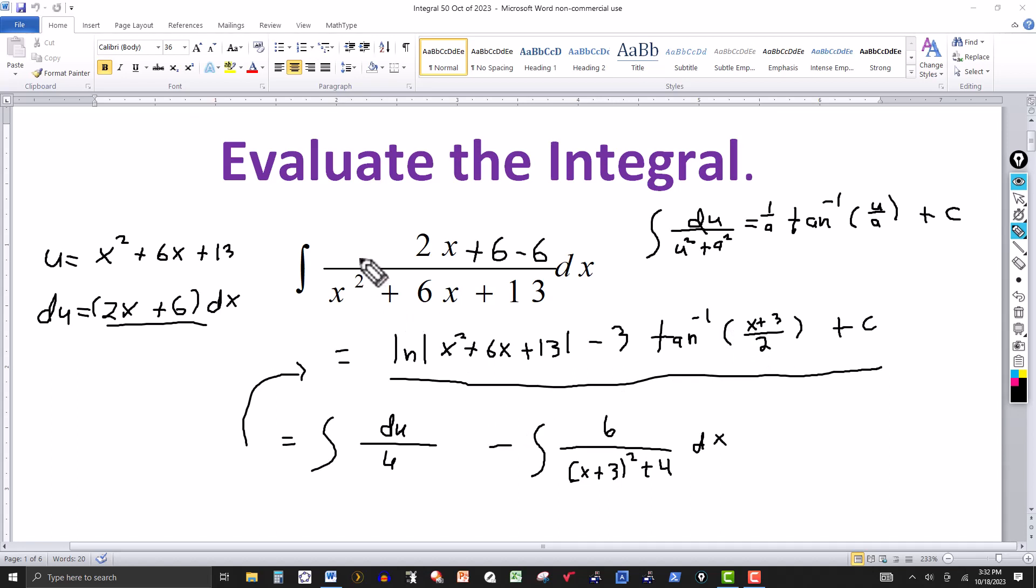We wind up using a u substitution in the first integral when we broke this up into two, and we wind up using the formula for tangent inverse that gives you tangent inverse right here, u over a multiplied by 1 over a. So the final answer here. Thanks for watching. We'll see you next time.